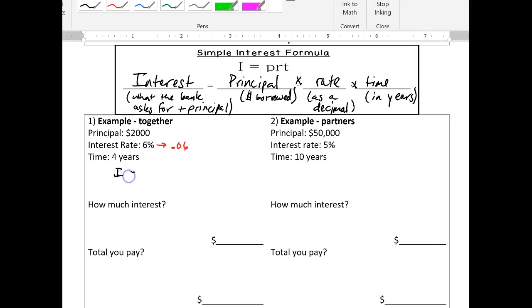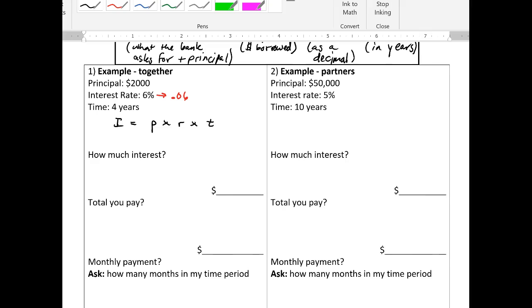So I is equal to P R T. Put a little swoop on my T so it doesn't look like a plus sign. And let's plug in the numbers we know. So my interest is going to be equal to my principal of $2,000 times a rate of 0.06 or 6% times four years. Put that in the calculator. I end up having to pay $480 in interest. So the total you pay is going to be your principal, what you borrowed initially, plus your interest.